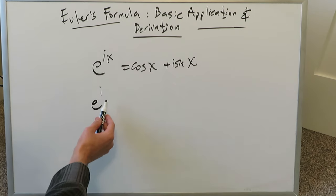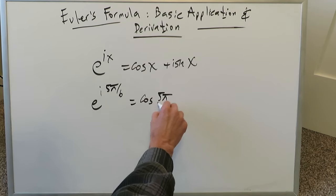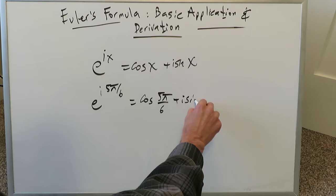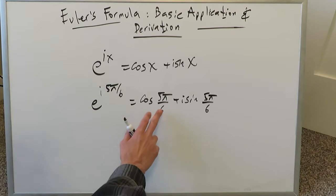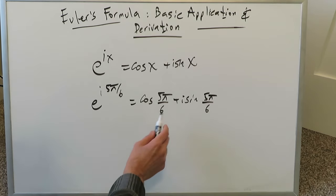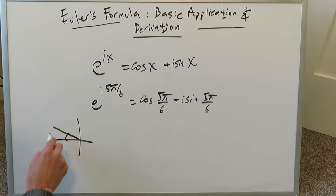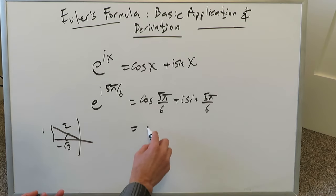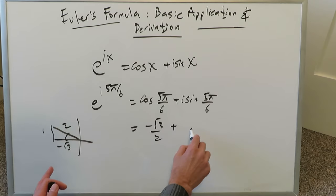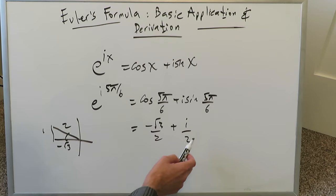Let's look at another quick question: e to the power of i times 5π/6. You can separate it using Euler's formula as cosine(5π/6) plus i sine(5π/6). Now 5π/6 is one of those 30-degree angles, but in the second quadrant — it'll be 150 degrees. Cosine is negative there. You're looking at a 30-degree reference angle in the second quadrant, so the result is −√3/2 plus i times 1/2, because sine of 150 is the same as sine of 30, which is 1/2.